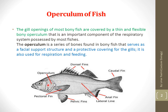As shown in the diagram, you can see the operculum of a fish. The gills of the fish are found on both sides, and the operculum acts as a covering over them, providing protection. It protects the gills and also serves a role in respiration. Its two major functions are gill protection and helping the fish respire — especially in bony fishes, because cartilaginous fishes do not have an operculum.